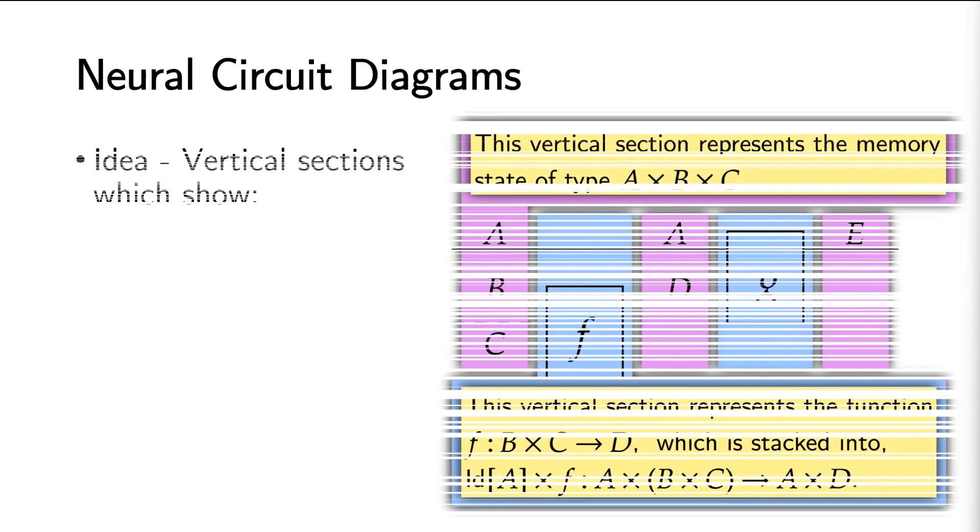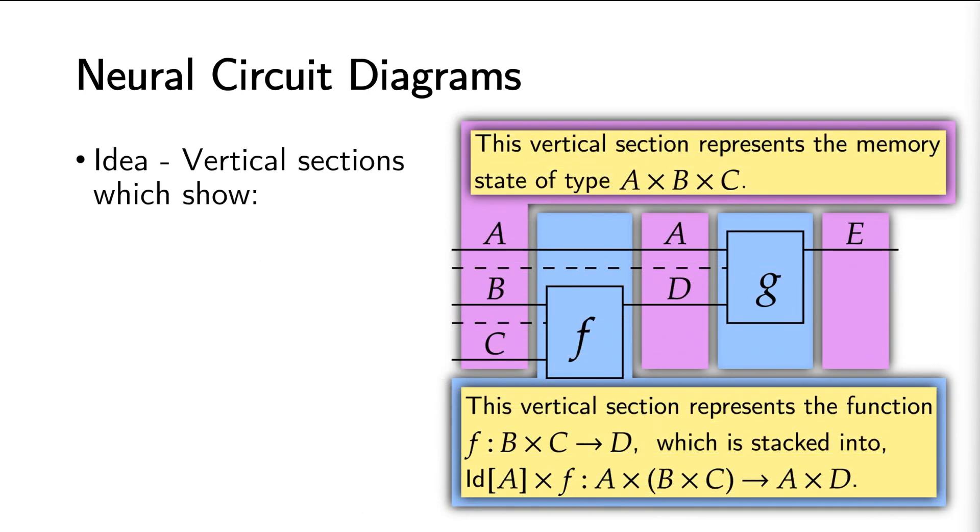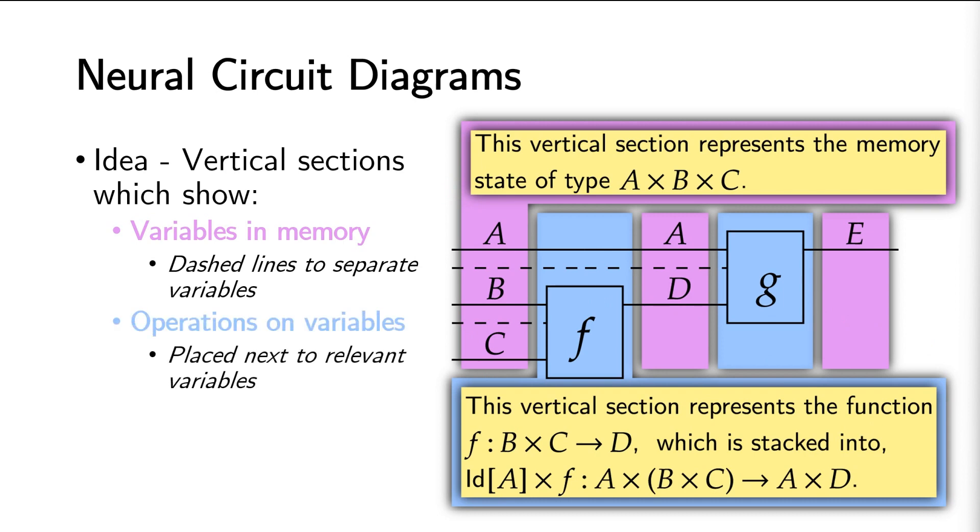Next, we will cover how to read neural circuit diagrams. Neural circuit diagrams have vertical sections which either show the variables in memory, here in magenta, or operations on those variables, here in light blue.